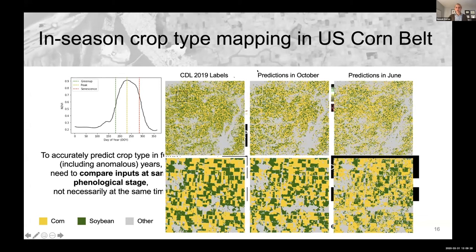Using different time points within the season, we can produce a map of where corn and soy are planted. Our predicted map as of October shows high accuracy, and we can also get a pretty good estimate as early as June, towards the very beginning of the season. Our estimates improve throughout the season, and we will be using this method in the 2020 season to map crop types in the Midwest.